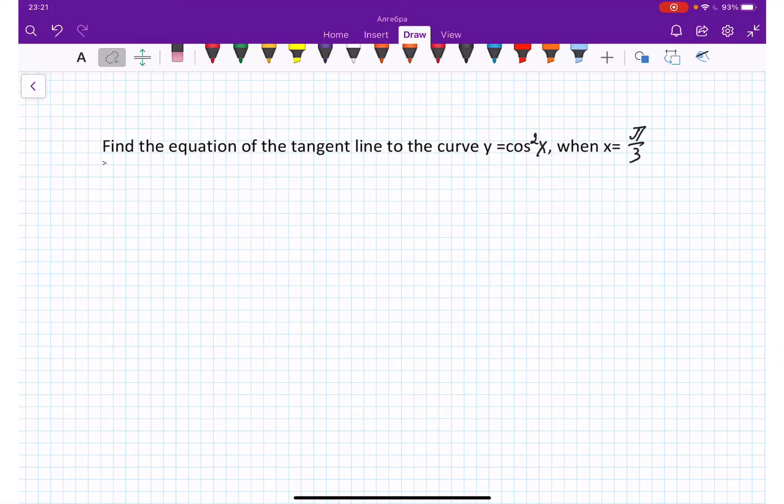Find the equation of the tangent line to the curve y equals cosine squared x, when x equals pi over 3.